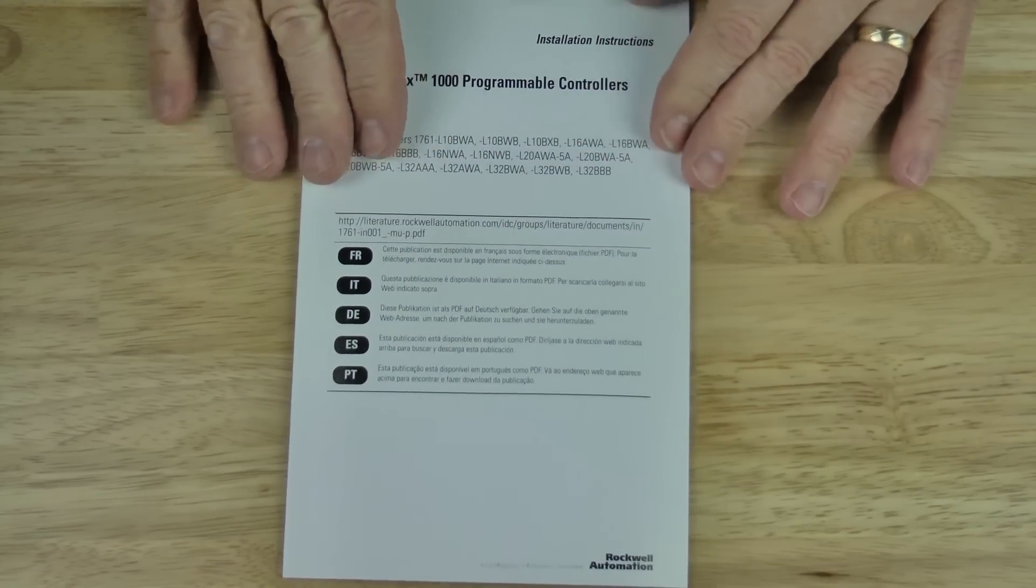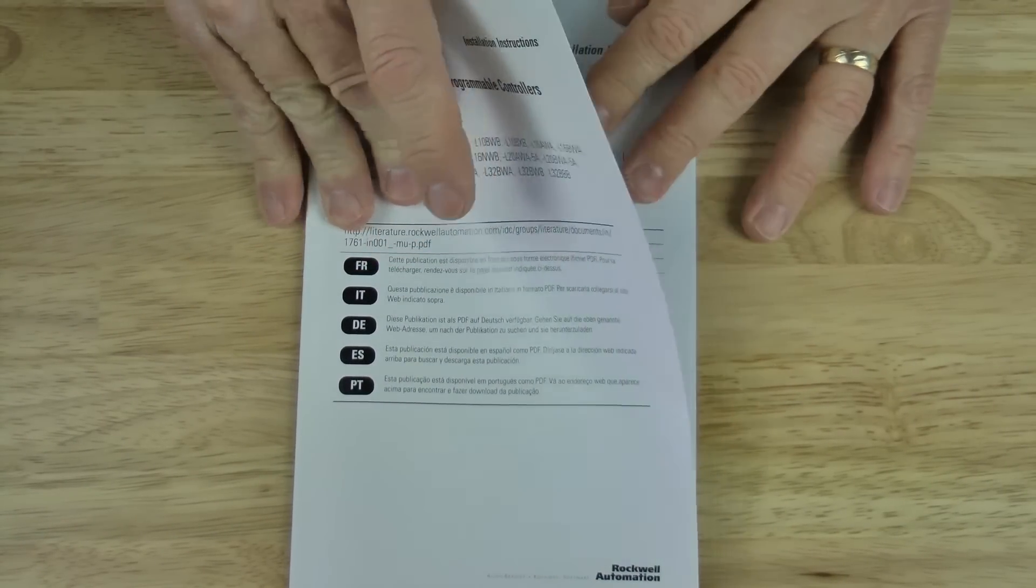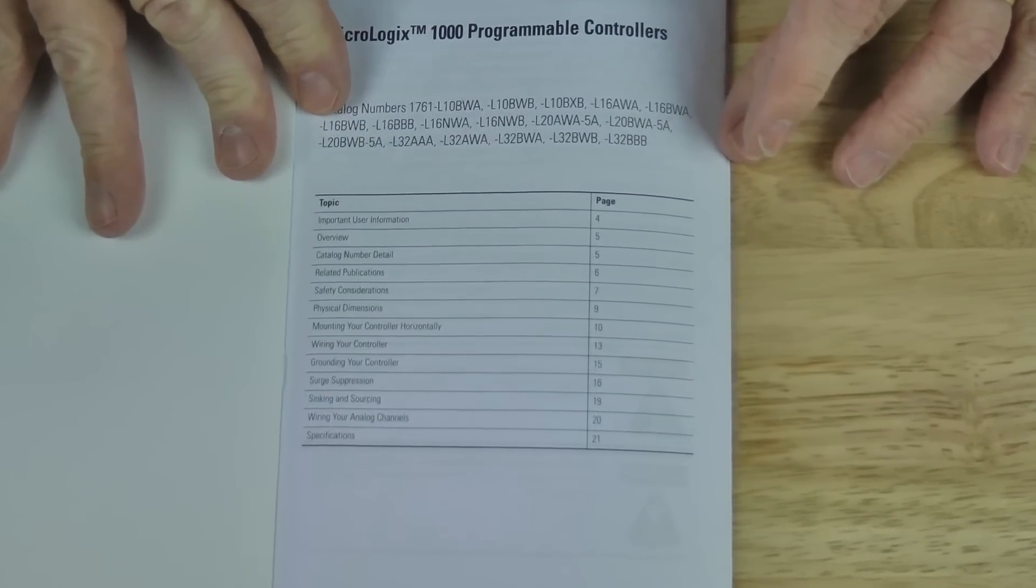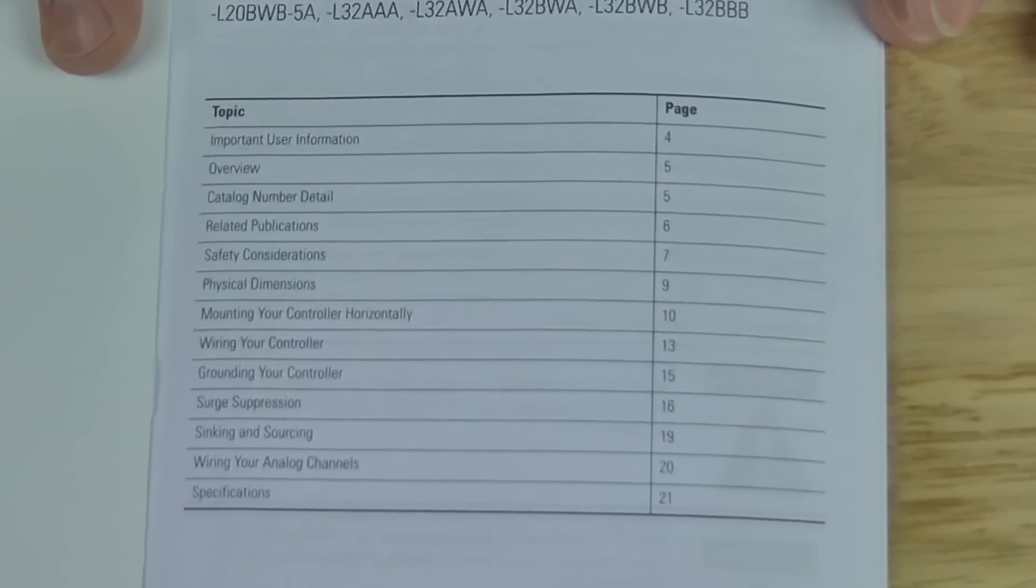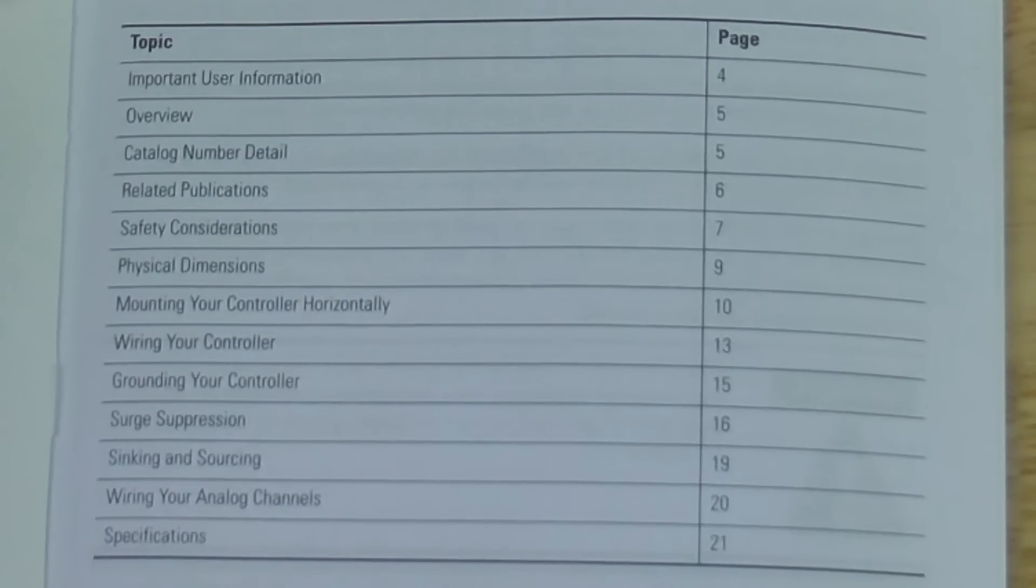We'll open up to the table of contents, and some of the noteworthy items that are covered in this document include mounting, wiring, grounding, and surge suppression. Those are all things that you really have to look at and read about prior to actually using your MicroLogix.